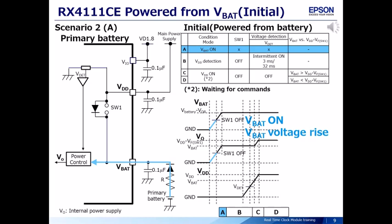Scenario 2, Case A: First, the power supply from the backup battery starts. The voltage of VBAT will rise.